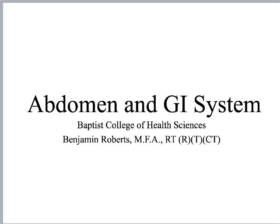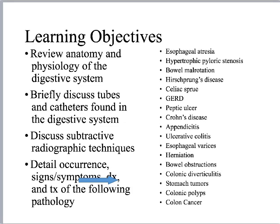We're going to be talking about the abdomen and GI system. We'll get a review of some pathology, anatomy, and physiology of the digestive system. A lot of what we're looking at when we do some of these studies is trying to figure out physiologically what's going on — why we have people swallowing barium or doing rectal contrast. We'll also need to talk about tubes and catheters found in the digestive system. We'll talk about subtractive radiographic techniques, because there's a big one in this system that they love to trip you up with.